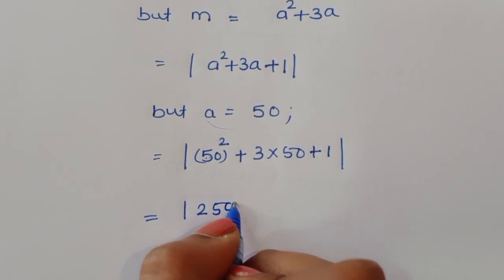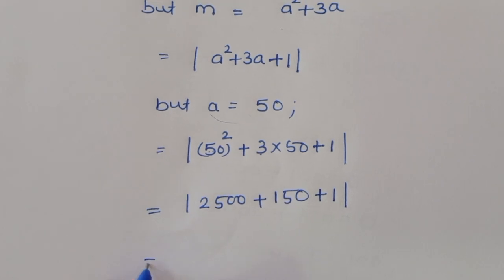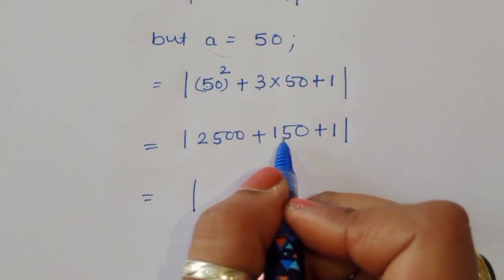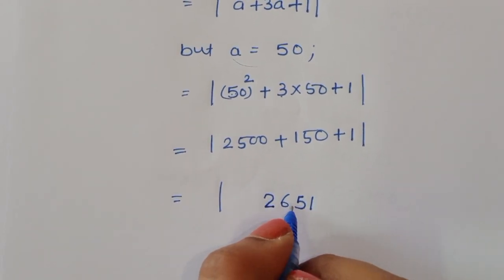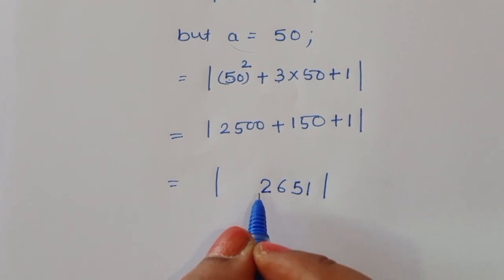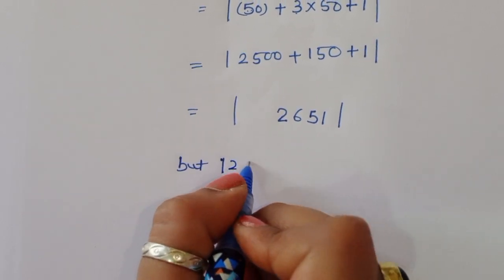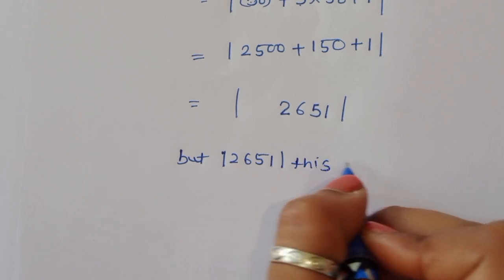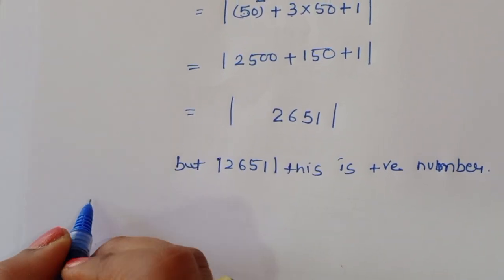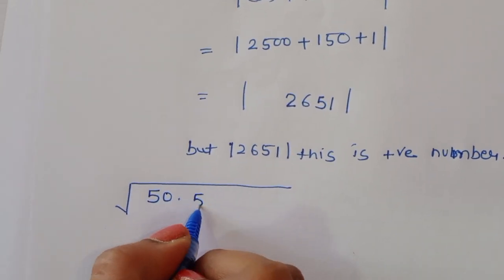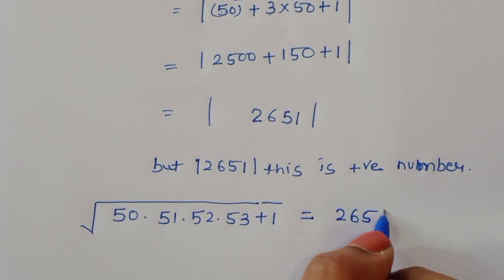So 2500 plus 150 plus 1 equals 2651. Since this is a positive number, mod of 2651 is just 2651. Therefore, the value of square root of 50 times 51 times 52 times 53 plus 1 is equal to 2651. This is the correct solution.